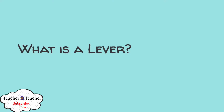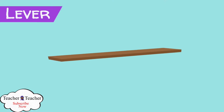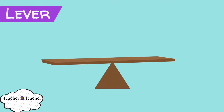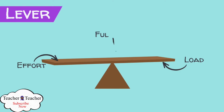What is a lever? A lever is a simple machine made of a rigid beam and a fulcrum. The effort and load are applied to either end of the beam. The fulcrum is the point on which the beam pivots.